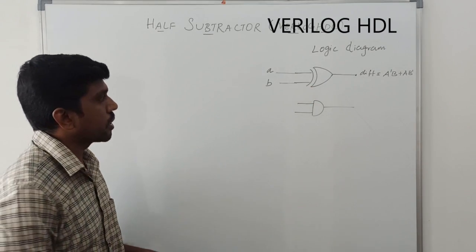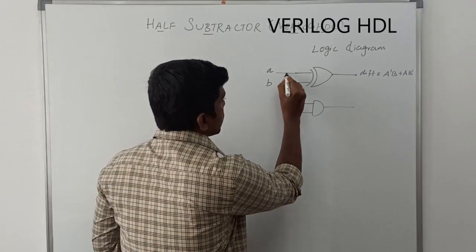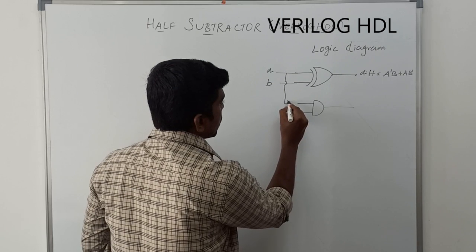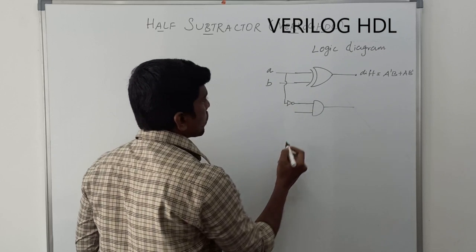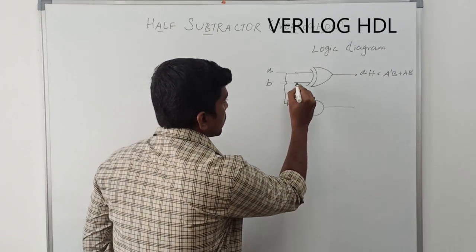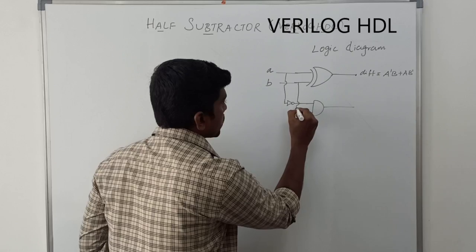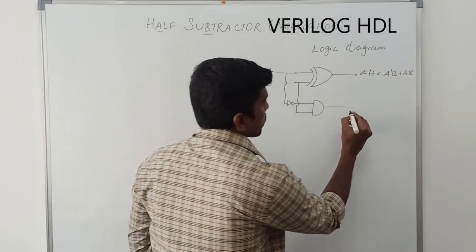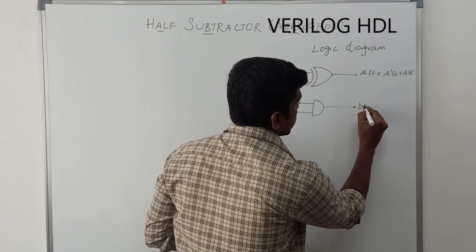It is an equation for XOR gate. Then, this A input is connected to NOT gate. Output of NOT gate is connected to input of AND gate. B input connected to second input of AND gate. Output is borrow.